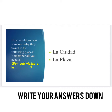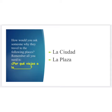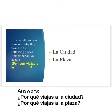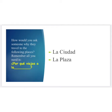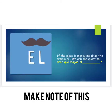Try these two for yourselves. How would you find out why someone travels to these two places? Remember the structure. Five minutes later — these are the answers. These places are feminine; they have the article 'la,' so this is what we would use. Now if the place is masculine — meaning that it has the article 'el' — and we want to find out why somebody travels to the place, we would simply say '¿Por qué viajas al?' and then the place.